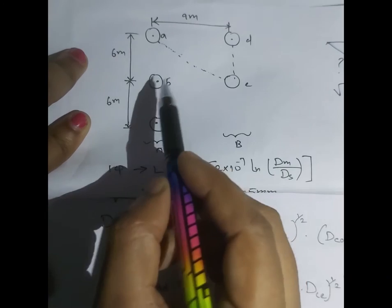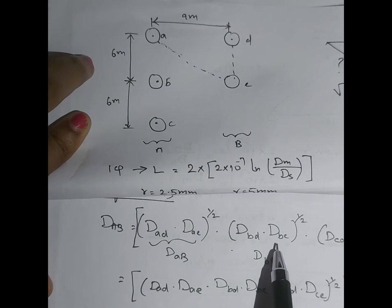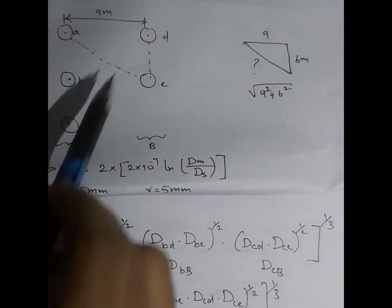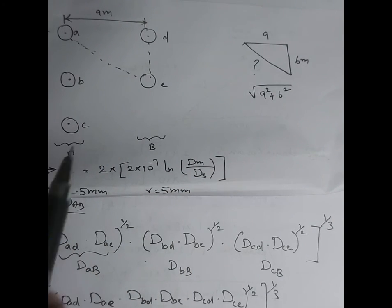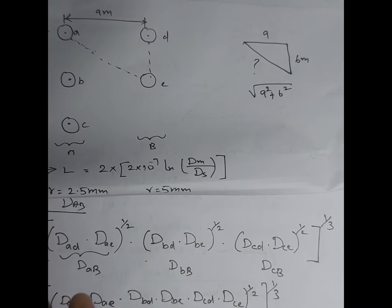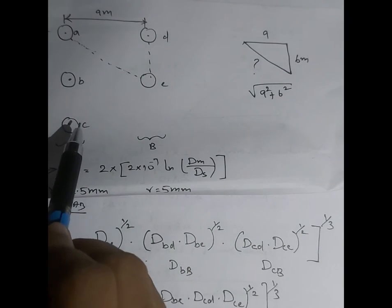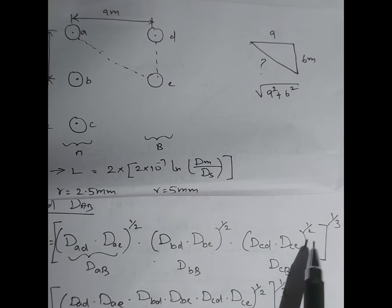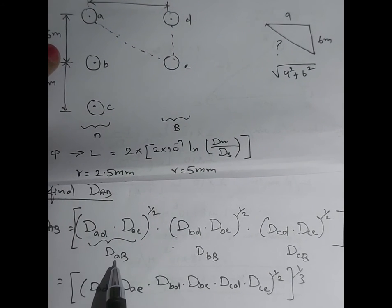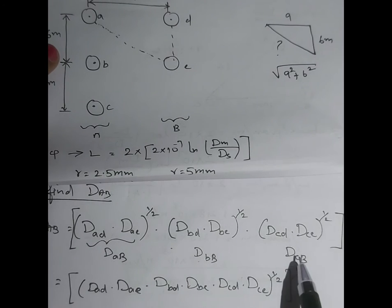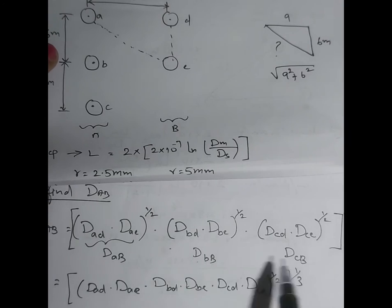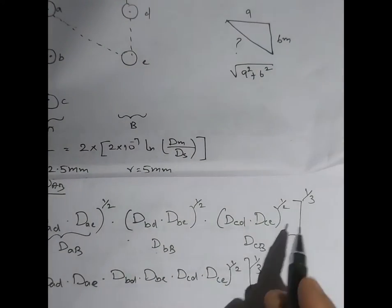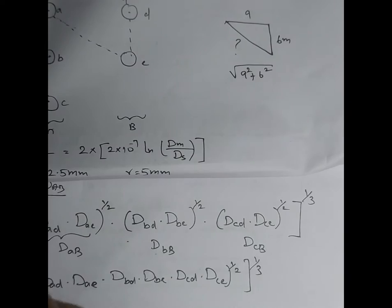Similarly, conductor B links with the remaining two conductors D and E, giving Dbd and Dbe whole power 1/2. Then conductor C with those two conductors, giving Dcd and Dce whole power 1/2. We can write these together as Dab, Dbb, and Dcb. We are having three distances, so geometrical mean means we take the cubic root — whole power 1/3.